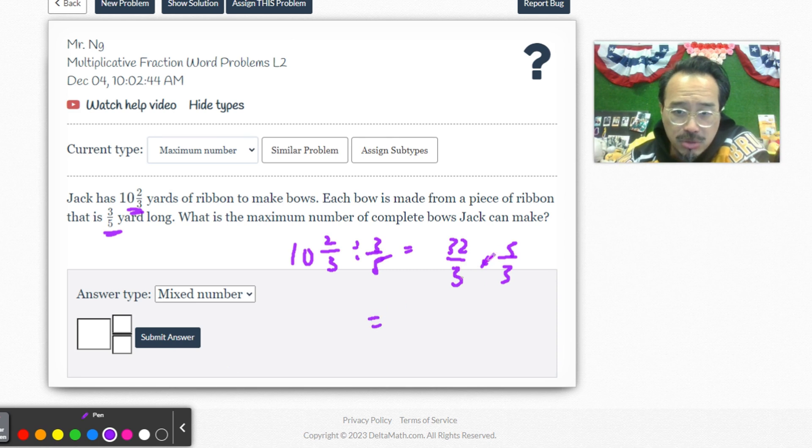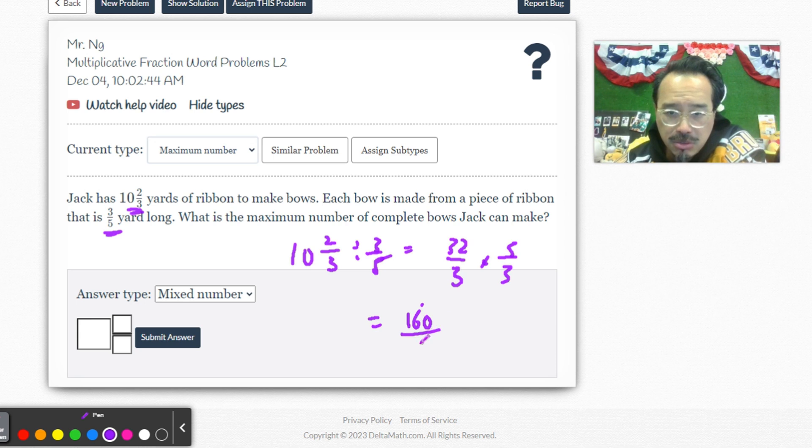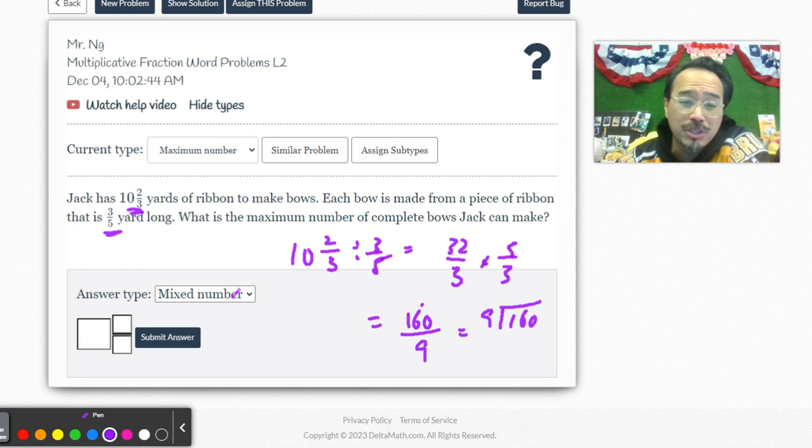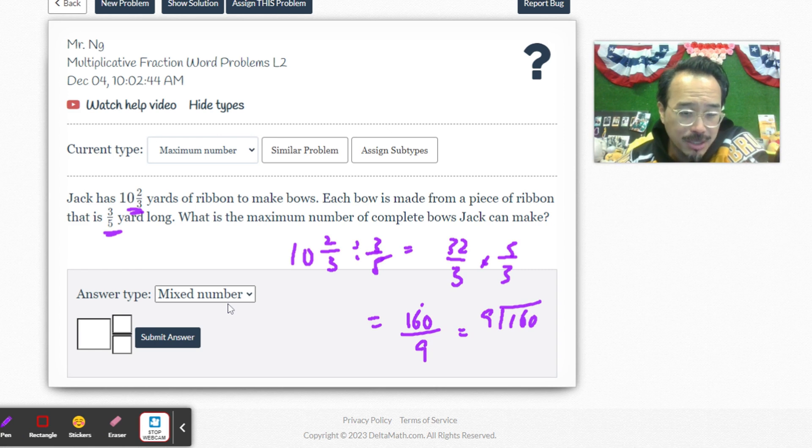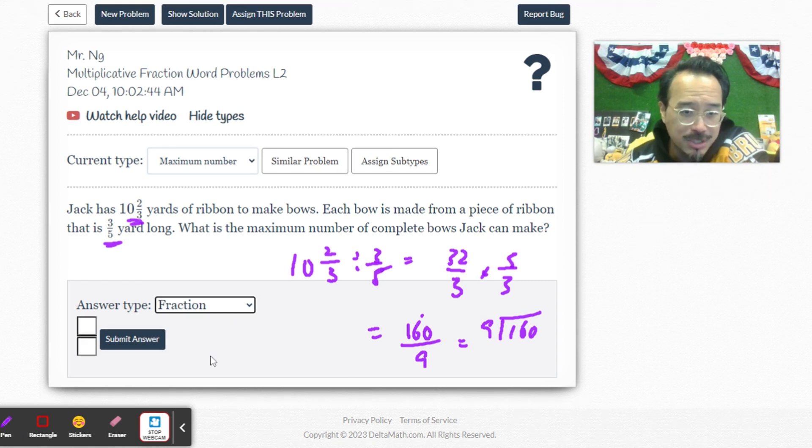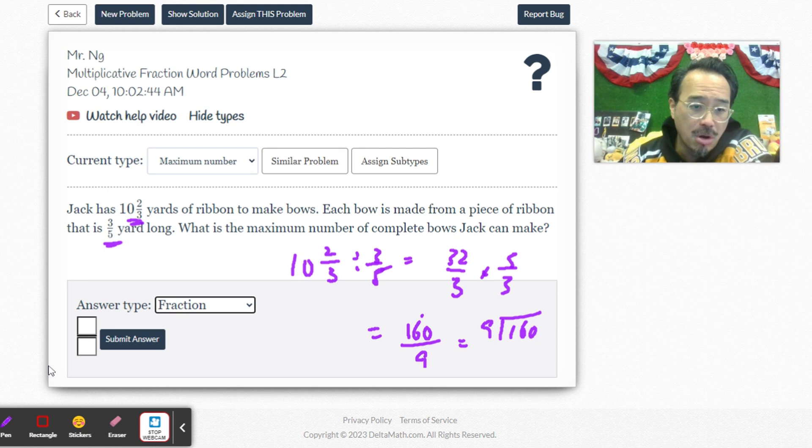We can't cross cancel so we just have to do the math. Five times two is ten, fifteen, sixteen. Three times three is nine. That's a little different from last night. Now I'm going to do long division because I have to convert to a mixed number. If you put a fraction in there, 160 over nine, they'll mark you wrong because the answer doesn't come out as a whole number.